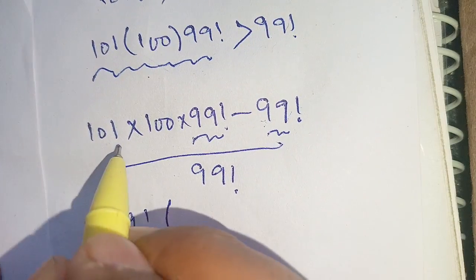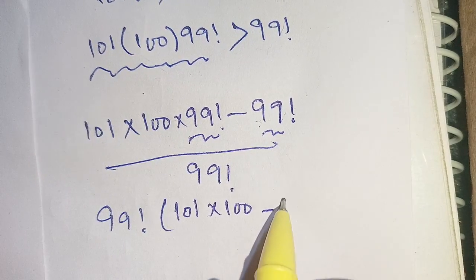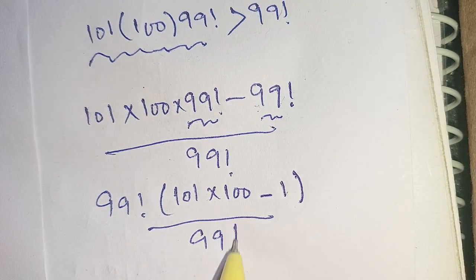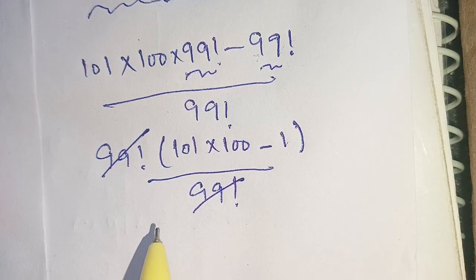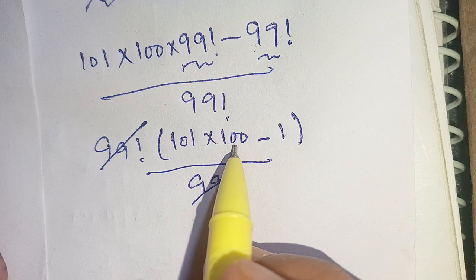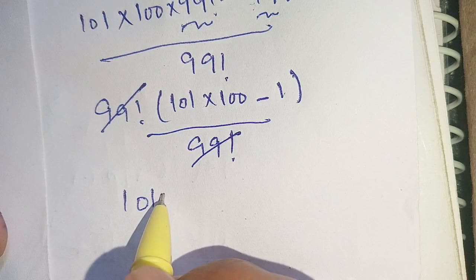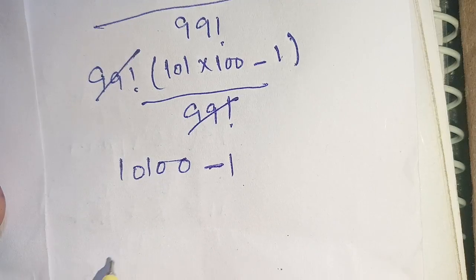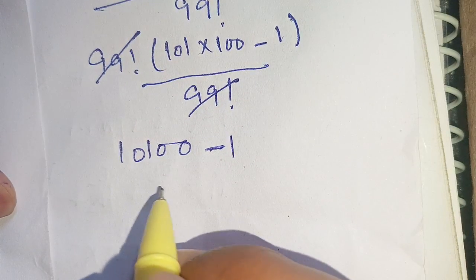By 99 factorial, now we can cancel out this 99 factorial by 99 factorial. And we have 101 times 100, it becomes 10,100. Now minus 1. When we subtract minus 1 from this term, we get 99.